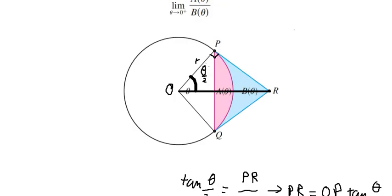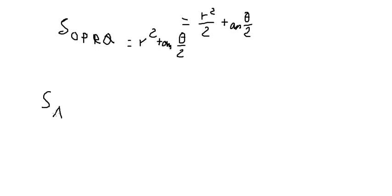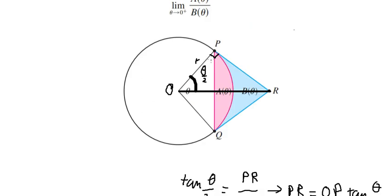Now we need to minus the white triangle and the pink area. So we need to find the area of this one first. That should be about A(theta). We have the white triangle here. I will call this point K — this is the intersection between OB and OR. So we have a right triangle here with angle theta/2 at O.